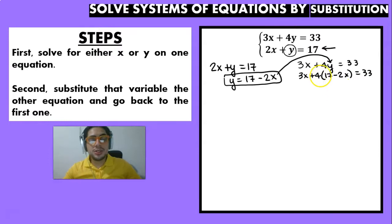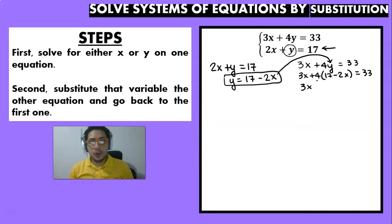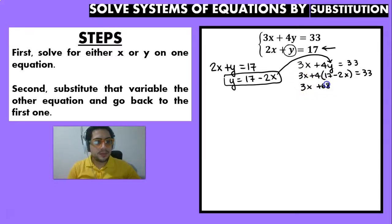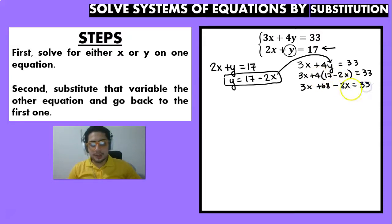Now we just solve the equation. We have 3x, then 4 times 17 which gives us 68, and then 4 times minus 2x — remember you have to multiply both terms — so 4 times minus 2 is minus 8x, and that is equal to 33.